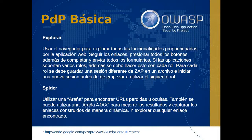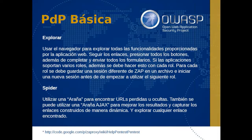En una primera instancia de una prueba de penetración fundamental, vamos a utilizar el navegador para explorar todas las funcionalidades proporcionadas por la aplicación web. El proceso es manual: vamos a hacer clic en los enlaces, presionar todos los botones, rellenar los formularios y enviarlos. Si las aplicaciones soportan varios roles, como usuario normal y usuario administrador, vamos a deber hacer todo esto con los roles involucrados. Para cada rol se puede guardar una sesión diferente en ZAP Proxy en un archivo, y luego iniciar otra nueva sesión antes de empezar a utilizar el siguiente rol.